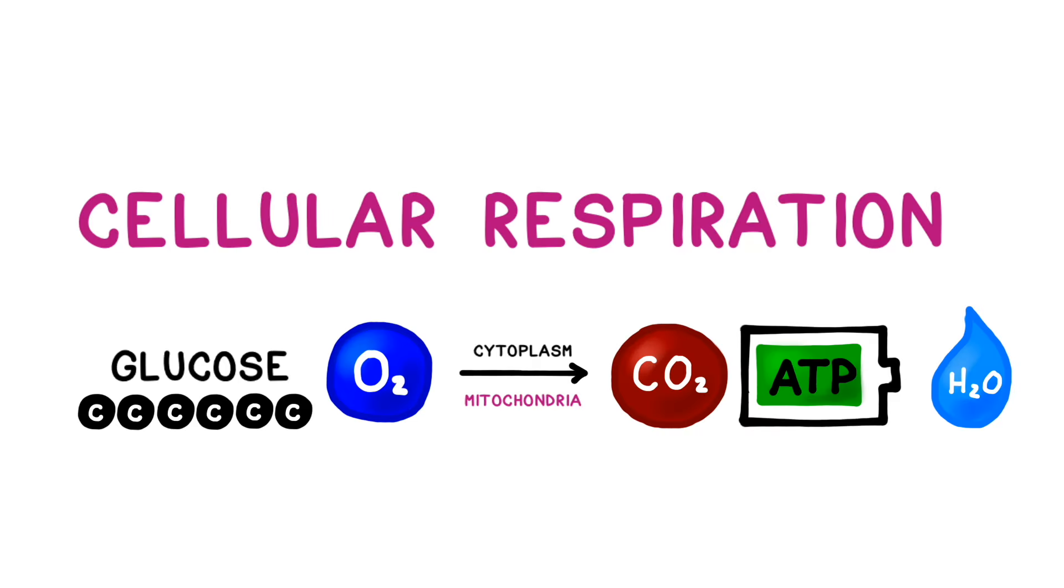So in summary, we used both glucose and oxygen to generate carbon dioxide, ATP, and a little bit of water. So that's pretty much it on cellular respiration, and I hope you found this video useful. If you did, please remember to like, comment, and subscribe. See you later!